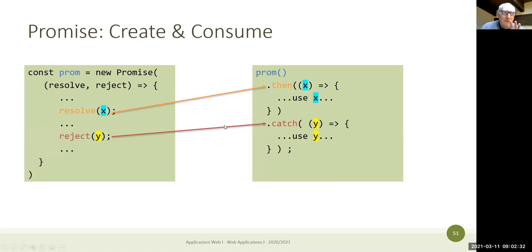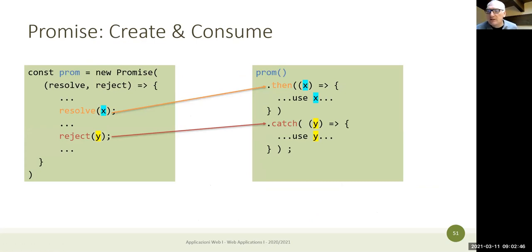As a graphical reminder: when creating a Promise, `resolve(x)` passes value `x` as the argument to the `then` callback. If `reject(value)` is called instead, that value becomes the argument to the `catch` callback.